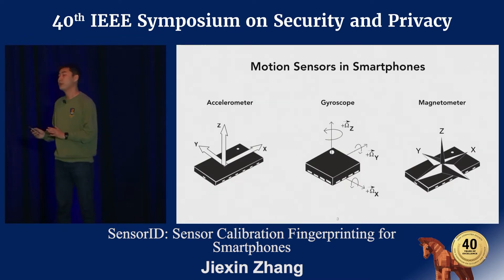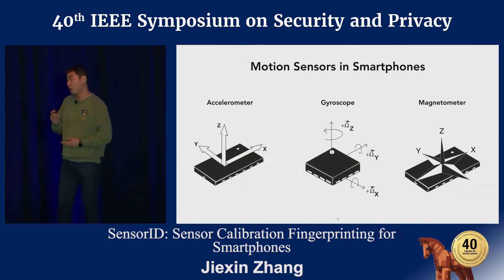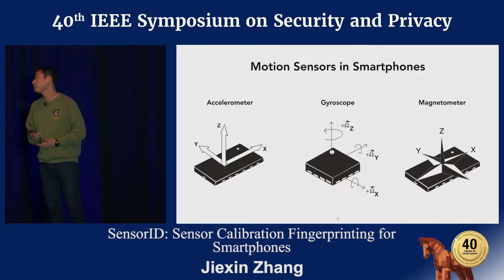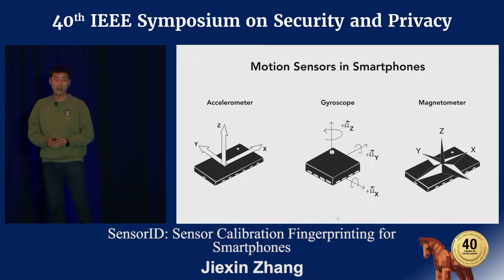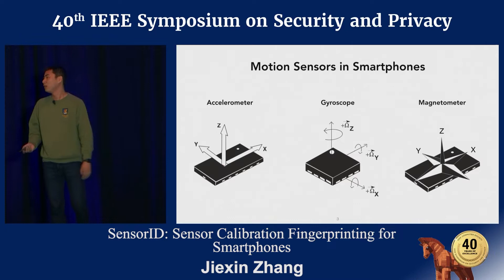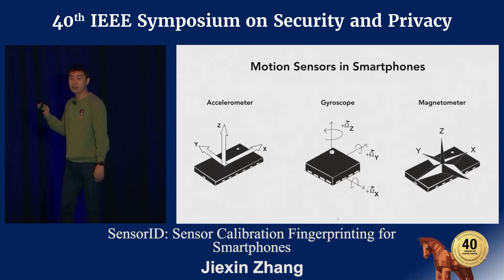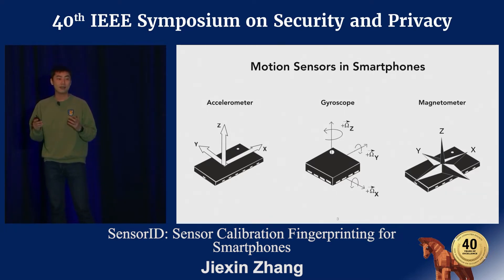Modern smartphones typically include a set of motion sensors, including the accelerometer, which measures the acceleration of the device; the gyroscope, which measures the rotation of the device; and the magnetometer, which measures the magnetic field around the device. Data from these sensors can be accessed by developers from either a mobile app or a mobile website, and it does not require any user permissions or user interactions.